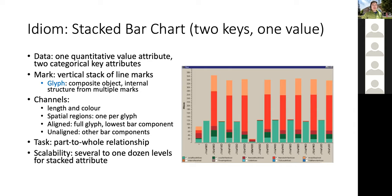In terms of scalability, you should avoid having more than about 10 to 15 segments within each bar, as too many segments make it difficult to track which segment in one bar corresponds to the same segment in another bar.